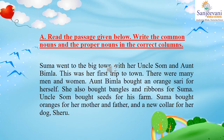Let's read the passage. Suma went to the big town with her uncle Soma and Aunt Bimla. This was her first trip to town. There were many men and women. Aunt Bimla bought an orange sari for herself. She also bought bangles and ribbons for Suma. Uncle Soma bought seeds for his farm. Suma bought oranges for her mother and father, and a new collar for her dog, Sheru.